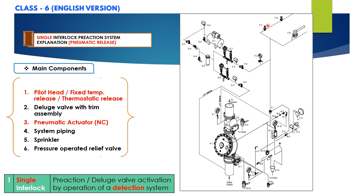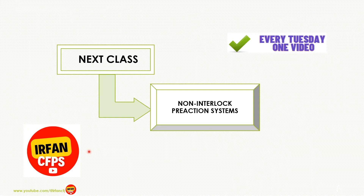Pilot head and fixed temperature releases are closed type sprinklers; the thermostatic release opens to allow pressure in the release system to escape. As shown in the schematic, the air compressor piping is connected to the system piping for pressurizing, and this network is also connected to the pneumatic detection system. In fire condition, operation of the pneumatic release system opens the deluge valve to fill the system with water. If any sprinklers have opened, water will flow from the system; if not, water remains in the sprinkler system piping until the sprinklers operate. A sprinkler head must open before water flows from the system. In the next class, we shall learn about non-interlock pre-action systems.